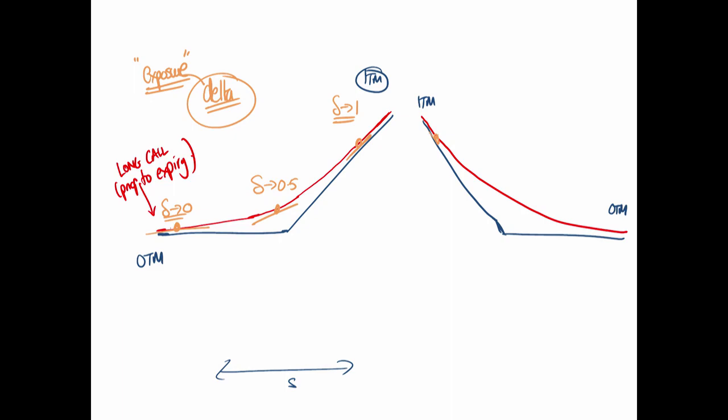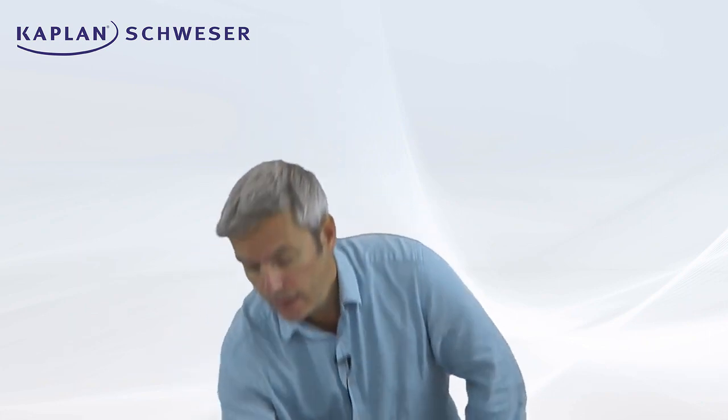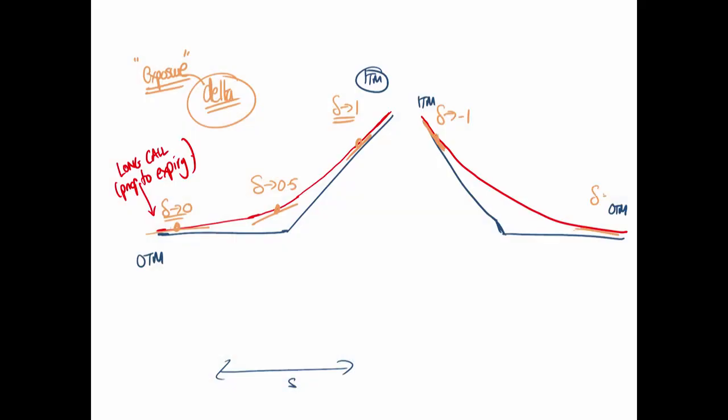Using the idea of slope for delta: when deeply in the money on a put, the slope is close to negative one — as the underlying goes up, the put falls by about the same amount. So delta is minus one there. Delta approaches zero from below as we move out of the money, and delta is about minus one-half when at the money.